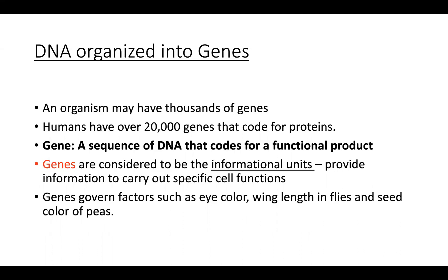As we look at the role of cell division and how new cells are generated, information is being passed from parent to offspring. The genes we inherit are responsible for governing factors that we see physically and those we can't see — behavioral things. Factors such as eye color are determined by your genes, the wing length in a fly, the seed color of peas — all dictated genetically. In our next chapter, we're going to take a look at how genetics or our genes dictate our physical features.